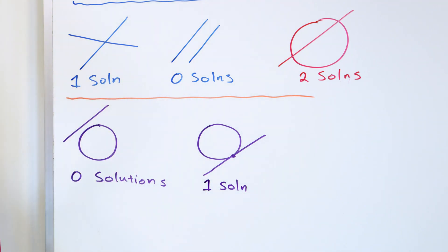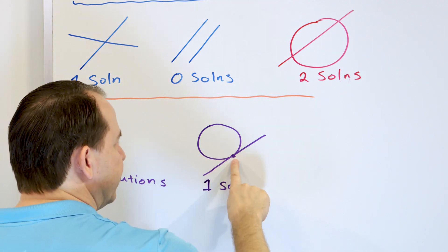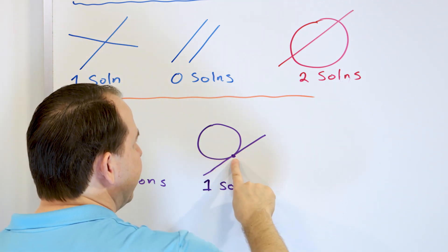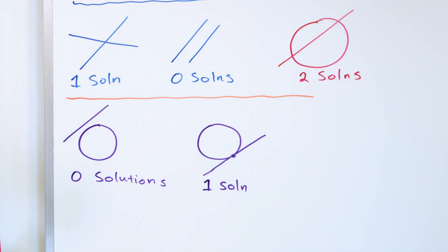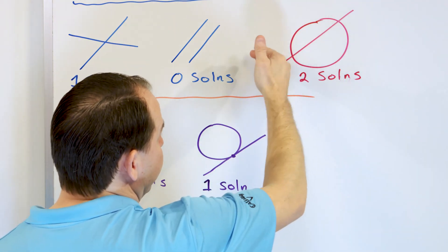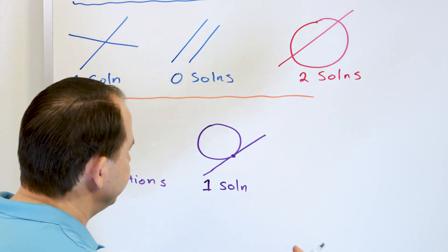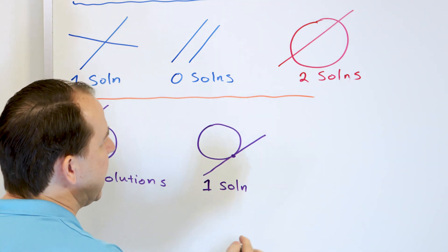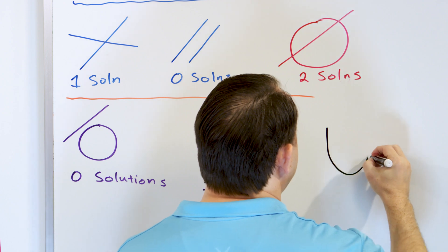So even in the case of a circle and a line, you can have zero solutions, one solution if it just touches the edge as a tangent, or two solutions if the line passes through both sides of the circle.